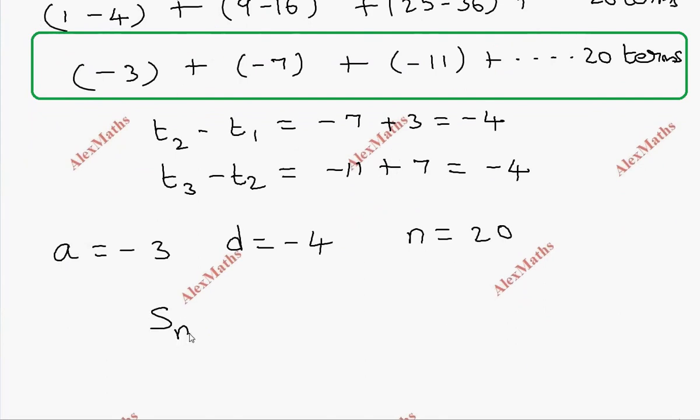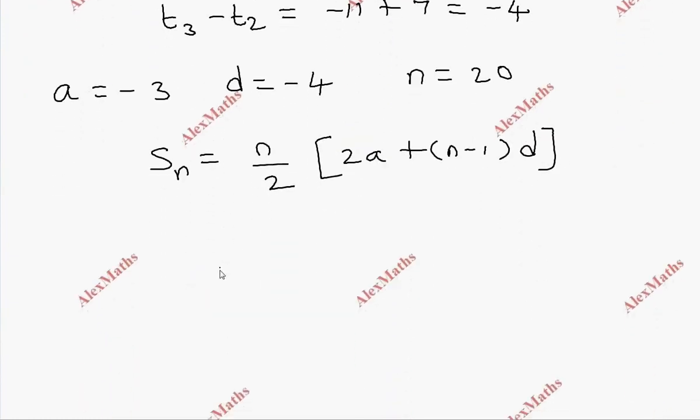The sum formula: S_n equals n by 2 into 2a plus n minus 1 into d. So S_20 equals 20 by 2 into 2 into minus 3 plus 20 minus 1, d value minus 4.